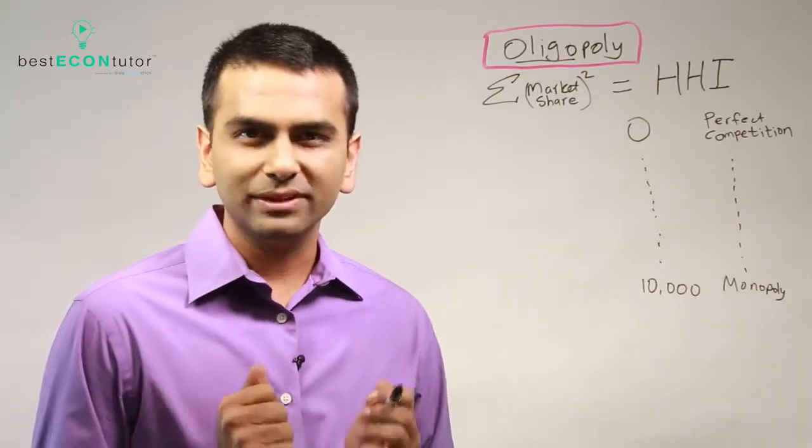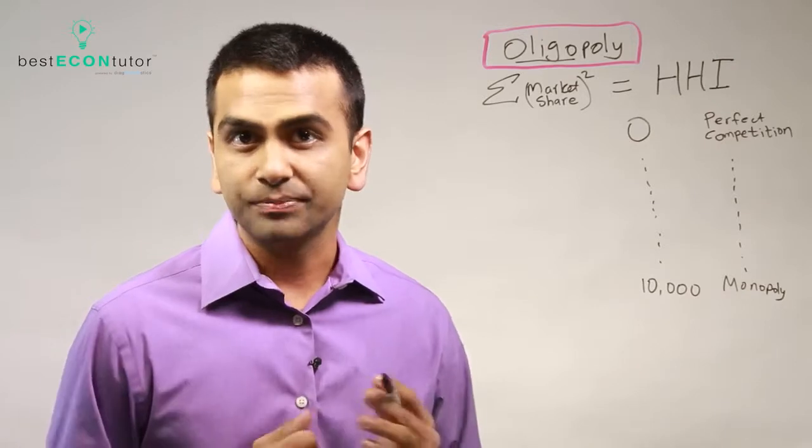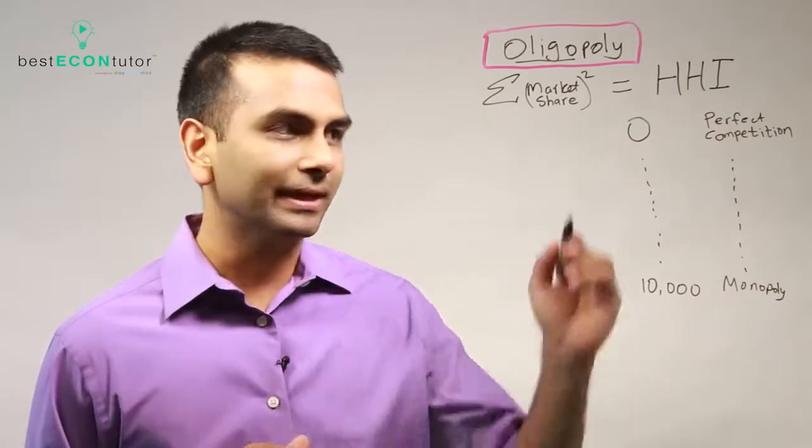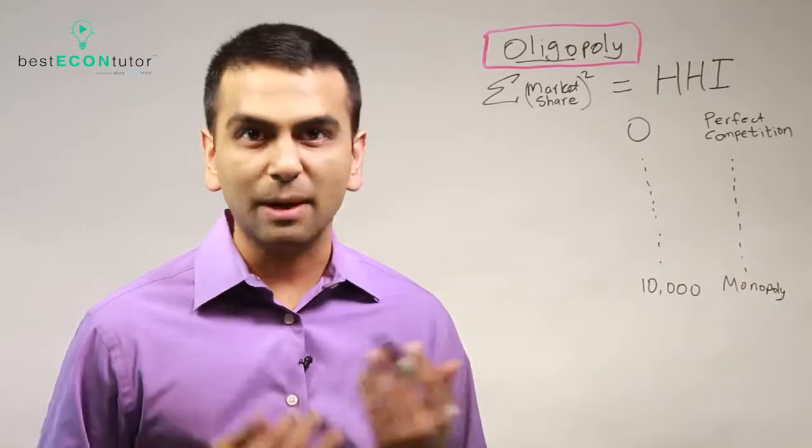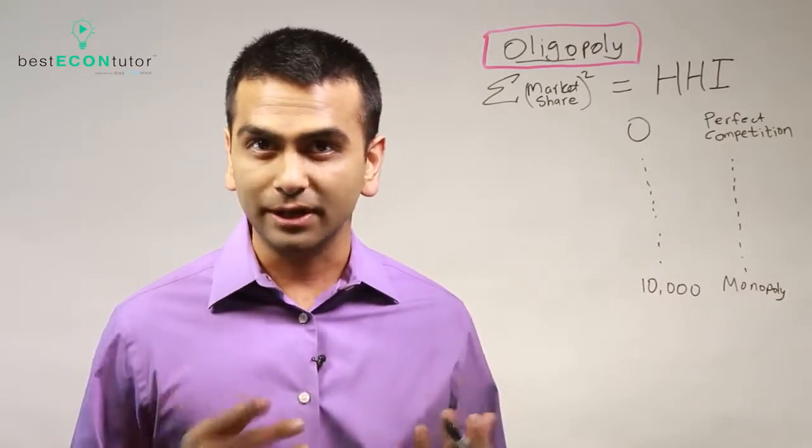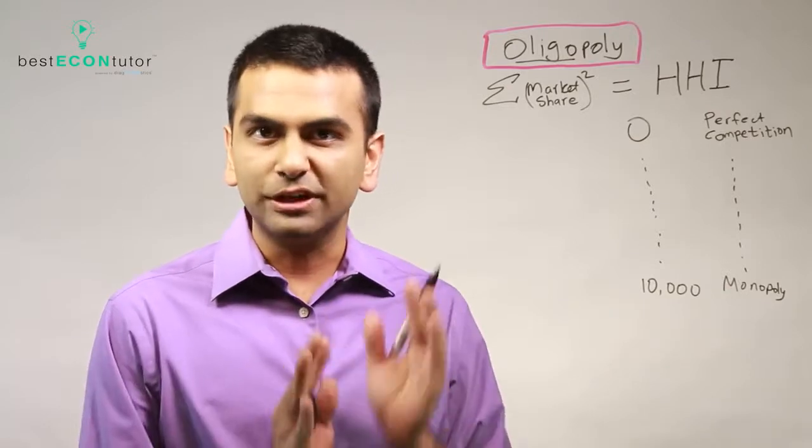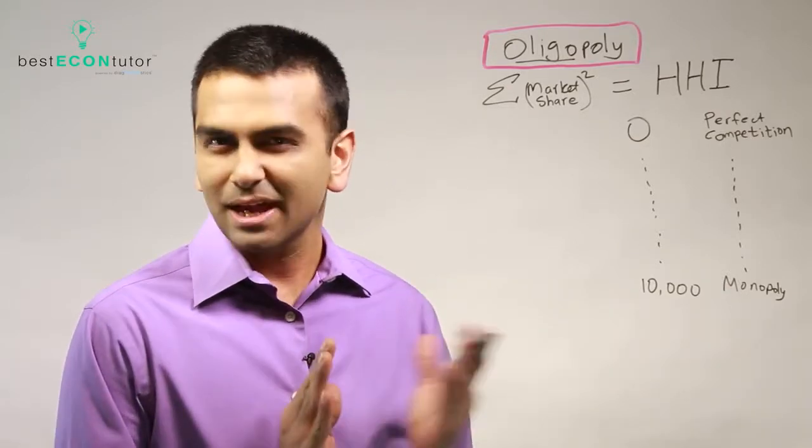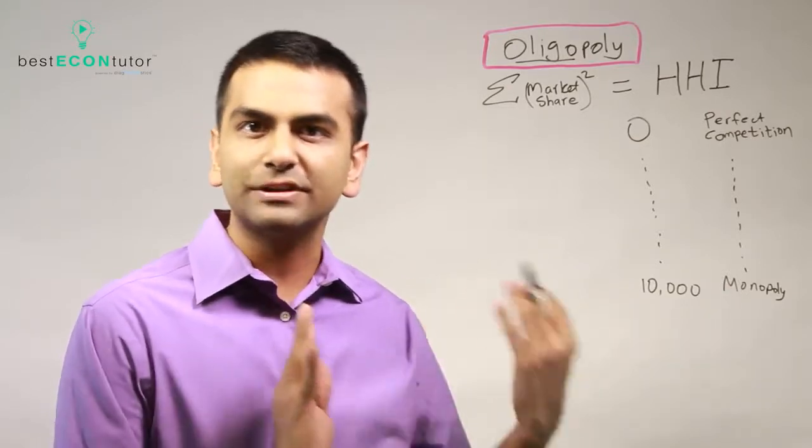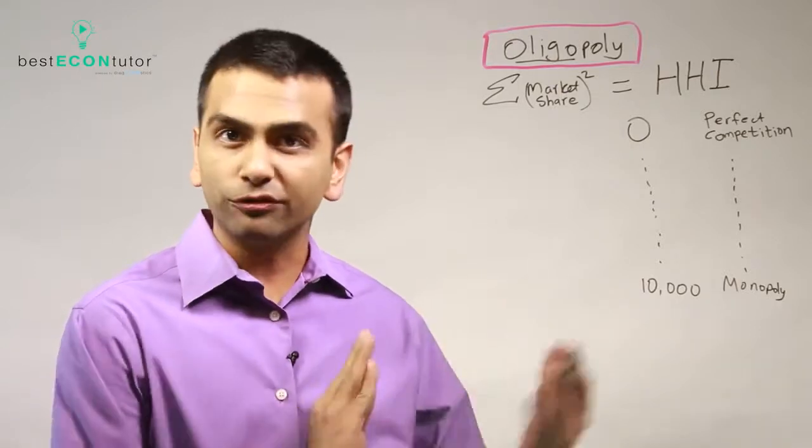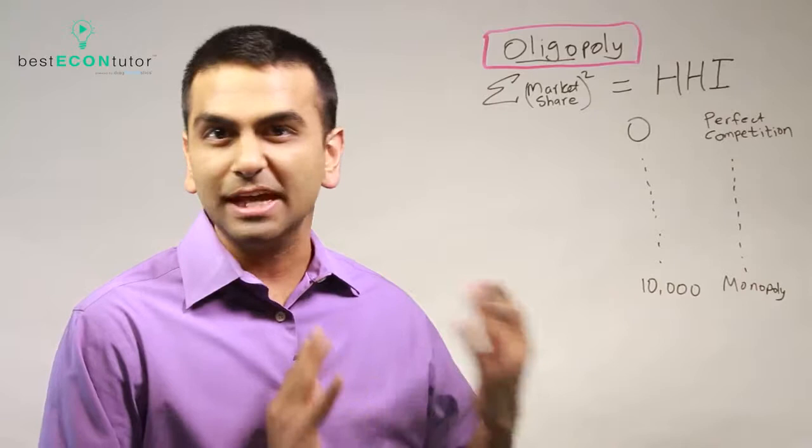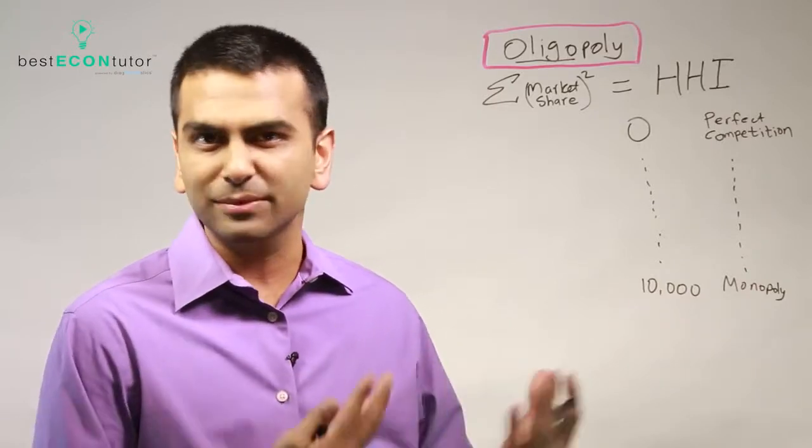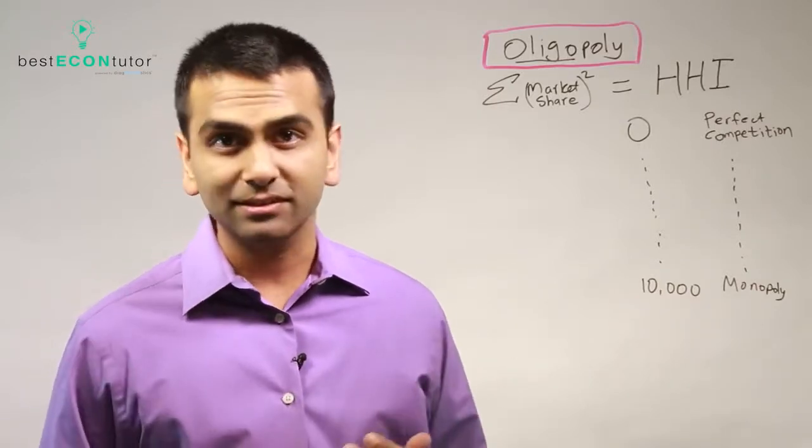So now what's the HHI index? Well it's basically a number between 0 and 10,000 and it's basically going to tell you how much competition there is in the market. Notice that the HHI, it's not like each individual business or firm has an HHI. You talk about an HHI for the industry as a whole. For all firms in that industry you can figure out the HHI for the industry and that's going to tell you how much competition there is or isn't in that industry.